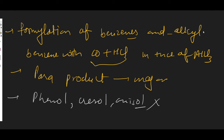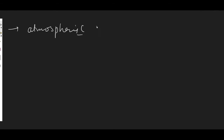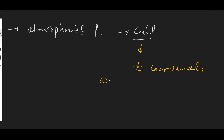An important point is that if the reaction is carried out at atmospheric pressure, then you have to take cuprous chloride as a catalyst. But if the reaction is carried out at high pressure, then cuprous chloride will not be required. The function of cuprous chloride is to coordinate with carbon monoxide in order to get a high concentration of carbon monoxide.